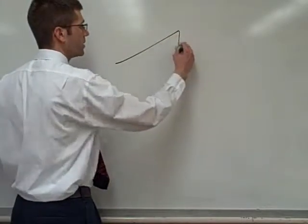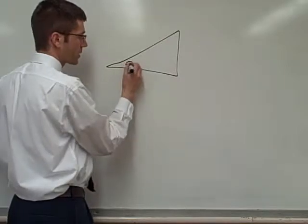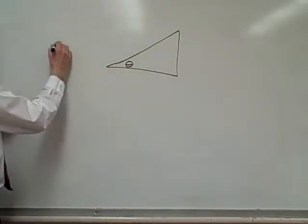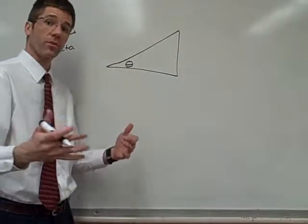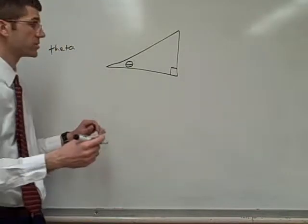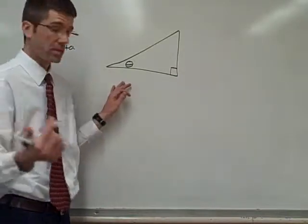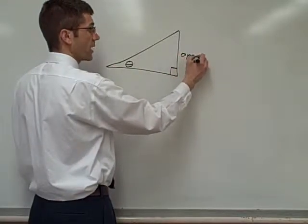If you have a right triangle, and we're just going to call this angle theta. It's a Greek letter theta, T-H-E-T-A. Then we can name every other side in this triangle based on that angle. So we have three options. One of them is going to be opposite this angle. Opposite meaning across from. So this is the opposite side.